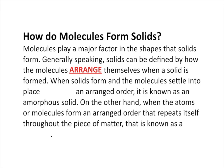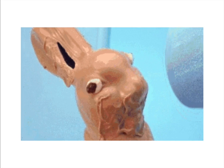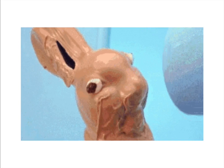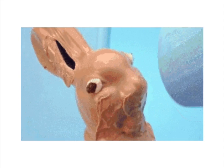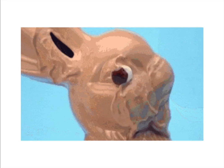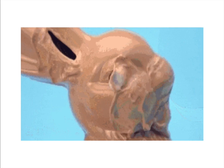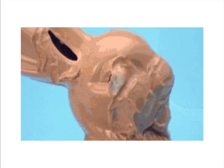Molecules make a major factor in the shape that solids form and the way molecules arrange themselves when a solid is formed. The first type is when solids form and the molecules set into place without any arranged order — that's what we call an amorphous solid. Amorphous solids tend not to have a fixed melting point; they just kind of melt, and when you hit them they break into all sorts of pieces you have to fit together like a puzzle. A great example is sweet, delicious chocolate — the molecules that make up chocolate don't arrange themselves in a perfect order.